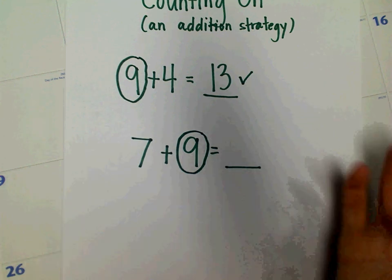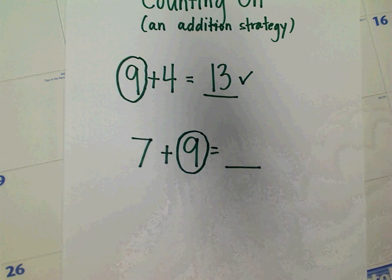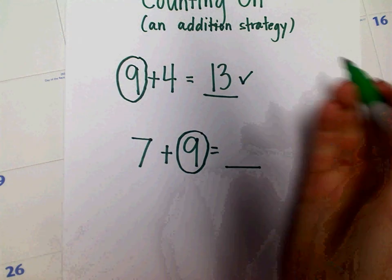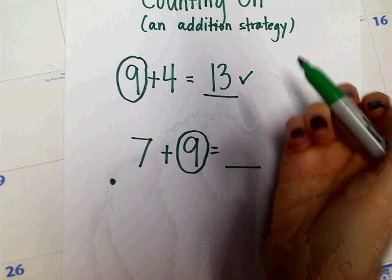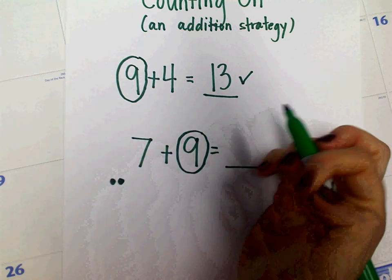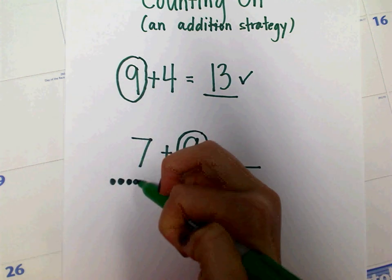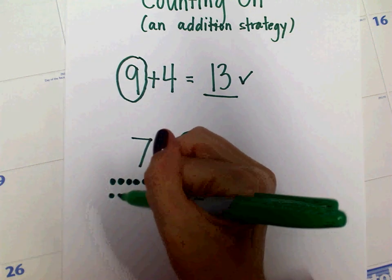Now remember I said you can either use your fingers or you can use dots, and I'm going to show you dots this time. So I have 9 in my head. I'm going to draw 7 circles and I'll do this in 5 groups so it's easier for me to see. So here's 5, 6, 7. Perfect.